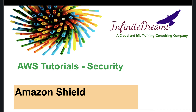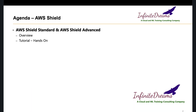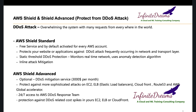In this quick AWS tutorial we are going to learn about AWS Shield. AWS Shield comes in two flavors: AWS Shield Standard and AWS Shield Advanced. We are going to see both Shield Standard and Shield Advanced and we are also going to do a quick hands-on.